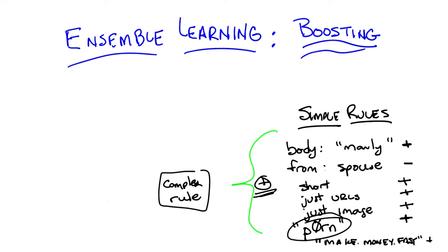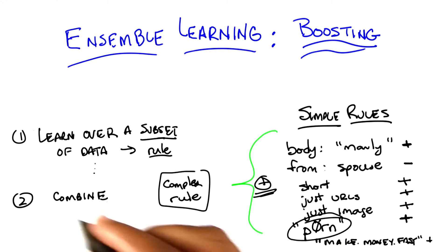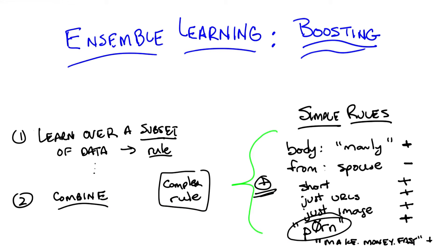Ensemble learning algorithms have a basic form that can be described in just one or two lines. Basically, you learn over a subset of the data and that generates some kind of a rule. Then you learn over another subset of the data and that generates a different rule, and yet a third, fourth, fifth rule and so on. Eventually you take all of those rules and combine them into one complex rule.